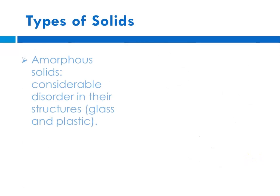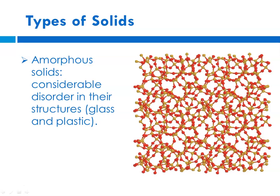The other type of solid that we talk about is amorphous solids. Amorphous solids have considerable disorder in their structures. We think in terms of glasses and plastics. And as you can see here, there is a great deal of disorder in the particles of an amorphous solid as opposed to a crystalline solid.